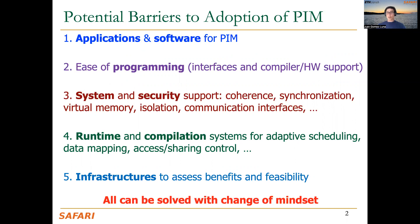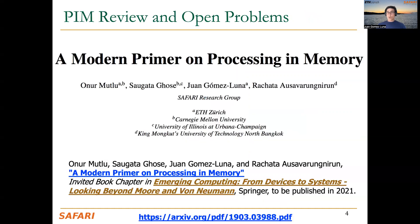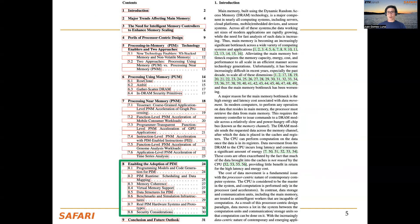Solving all these barriers requires a change of mindset that needs to encompass the entire compute stack, from the electrons and the devices to the algorithm and the problem. We discuss these issues and provide a long summary of recent trends in processing in memory in the book chapter, 'A Modern Primer on Processing in Memory.' In particular, Section 8 talks about enabling the adoption of processing in memory.